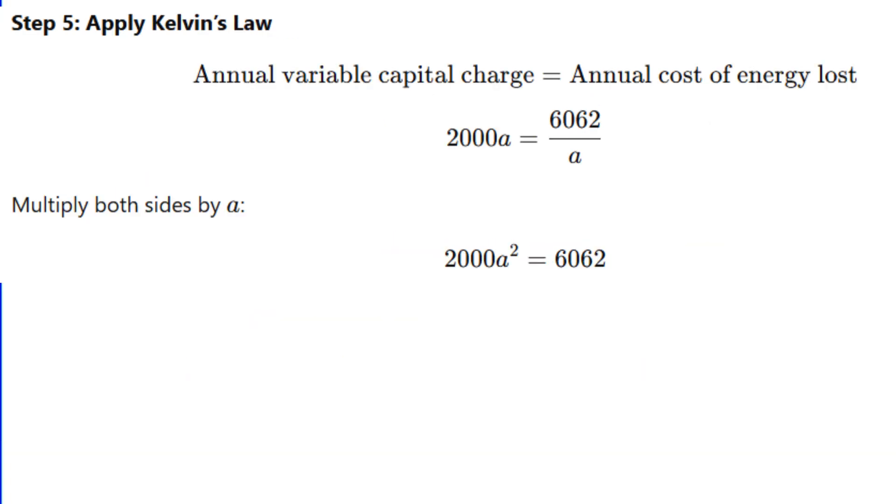Now apply Kelvin's law. Variable annual charge equals energy loss cost. So, 2000A equals 6062 by A. Multiply both sides by A. 2000A squared equals 6062. Solving this gives A equals root of 6062 by 2000, which is approximately 1.74 centimeters squared. So, the most economical conductor size for this system is 1.74 square centimeters.